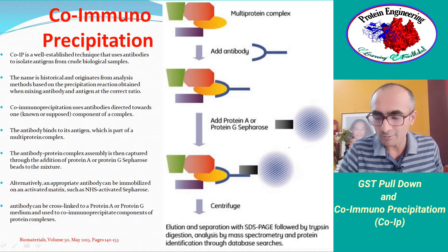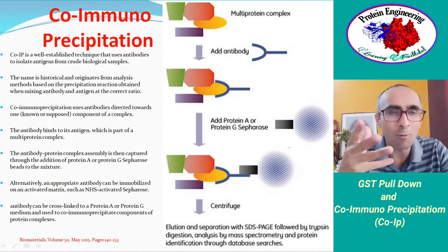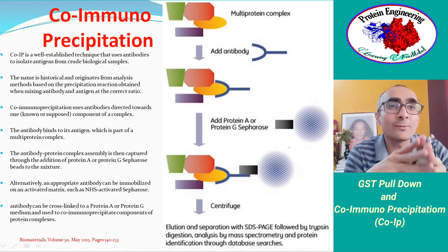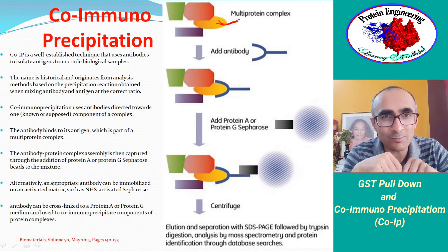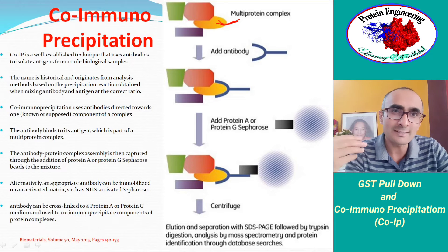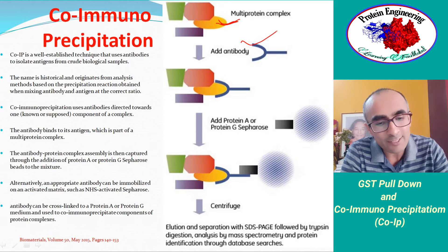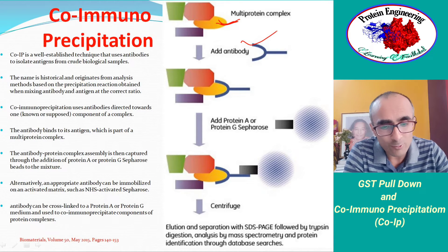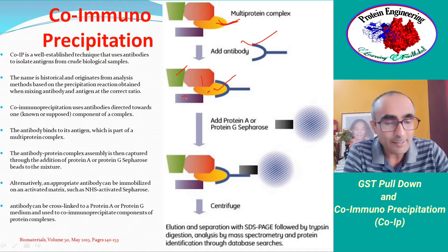Another method to determine protein-protein interactions in pull-down assays is co-immunoprecipitation (Co-IP). The advantage here is that you don't need to transform a construct into the host cell — you only need an antibody against one partner of the complex. For example, if the bait protein (shown in yellow) forms complexes with other proteins and you have an antibody against it, you take the cell extract where this protein exists and add the antibody. The antibody binds to the protein of interest, thereby marking the entire complex.